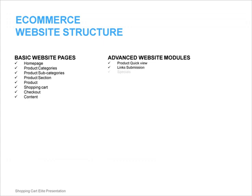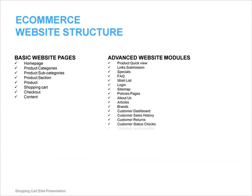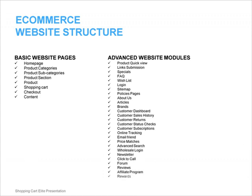A more advanced website can have additional pages such as product quick view, links submission, specials, frequently asked questions, wish list, register, login with open ID login such as MySpace, Facebook, etc., site map, policies pages, about us, articles, brands, customer dashboard, customer sales history, customer returns, customer status checks, customer subscriptions, online tracking, email friend, price matches, advanced search, wholesale login, newsletter, click to call, forum, reviews, affiliate program, and rewards.